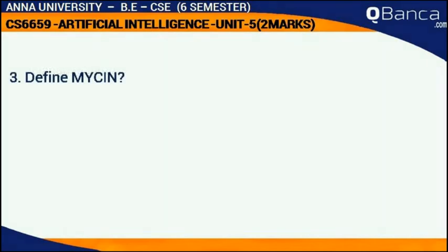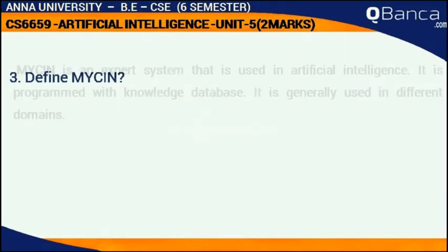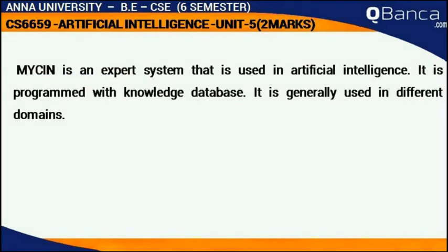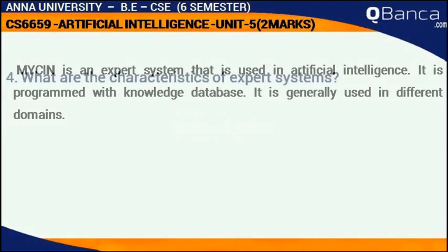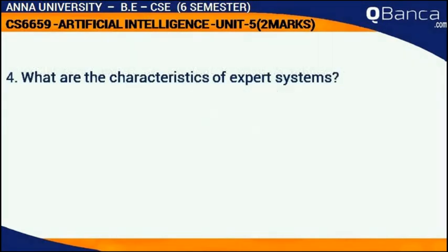Define Meissen. Meissen is an expert system that is used in artificial intelligence. It is programmed with a knowledge database and is generally used in different domains.